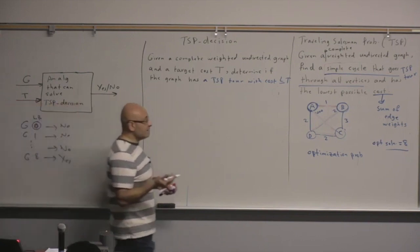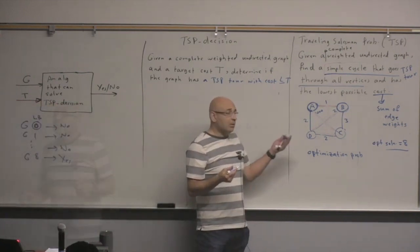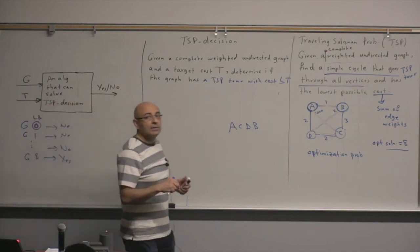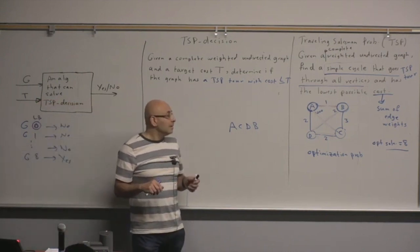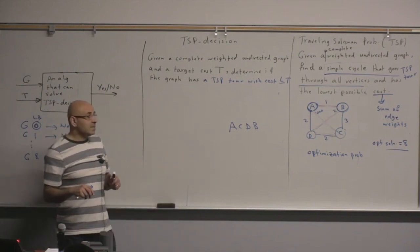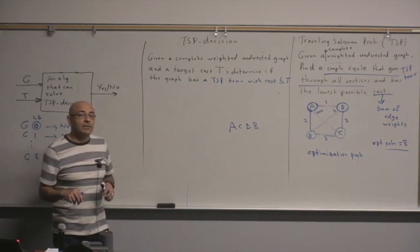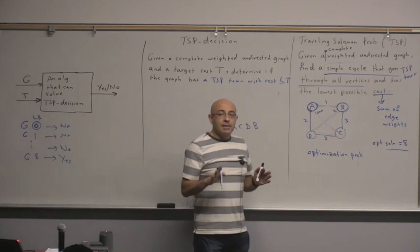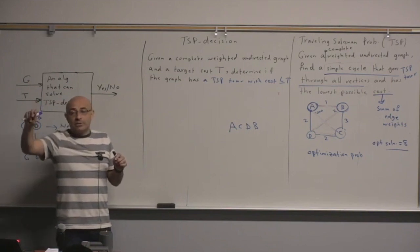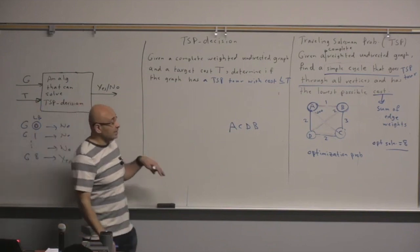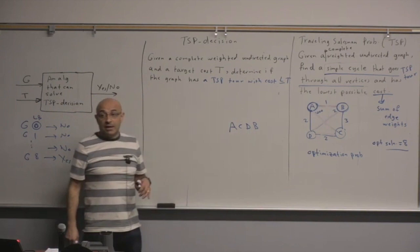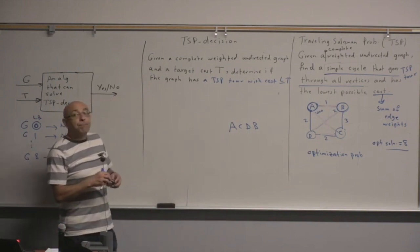A lower bound: take the edges, sort them by edge weight, and select the V smallest ones. Actually, it's V, not V minus one, because this is a cycle, not a path. V minus one is the number of edges needed to connect vertices in a tree. A cycle needs one more edge than a tree, so you need V edges for a cycle.